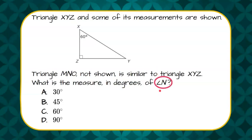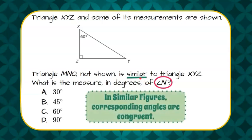So we are asked to find angle N, and we know that the triangles are similar. Understanding that in similar figures, corresponding angles are congruent.